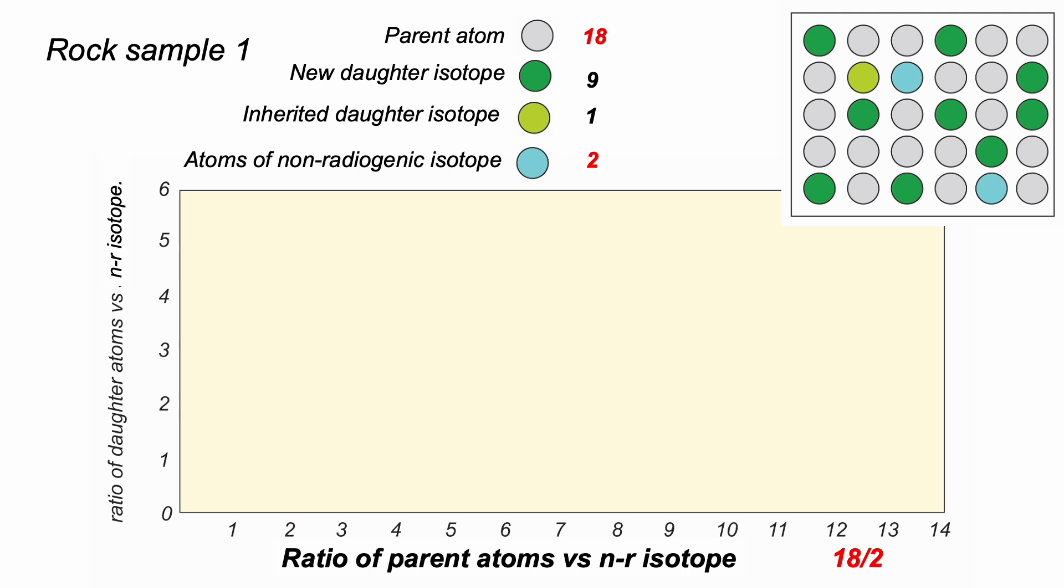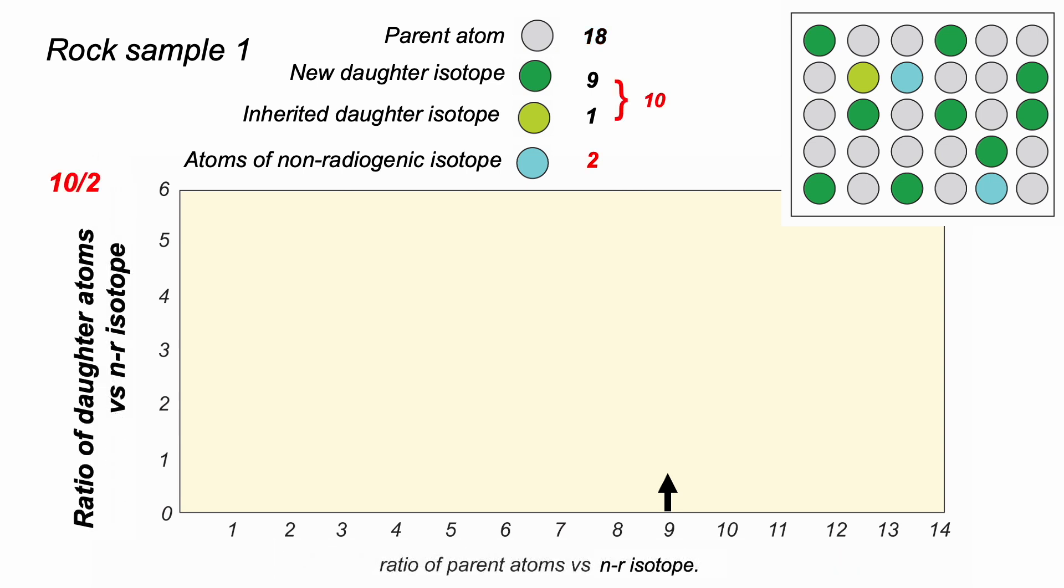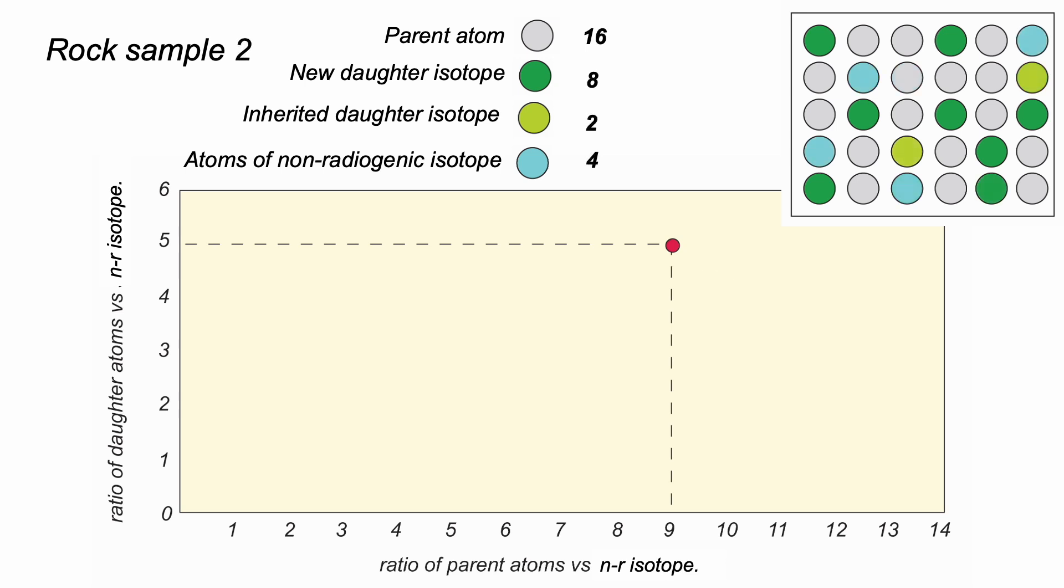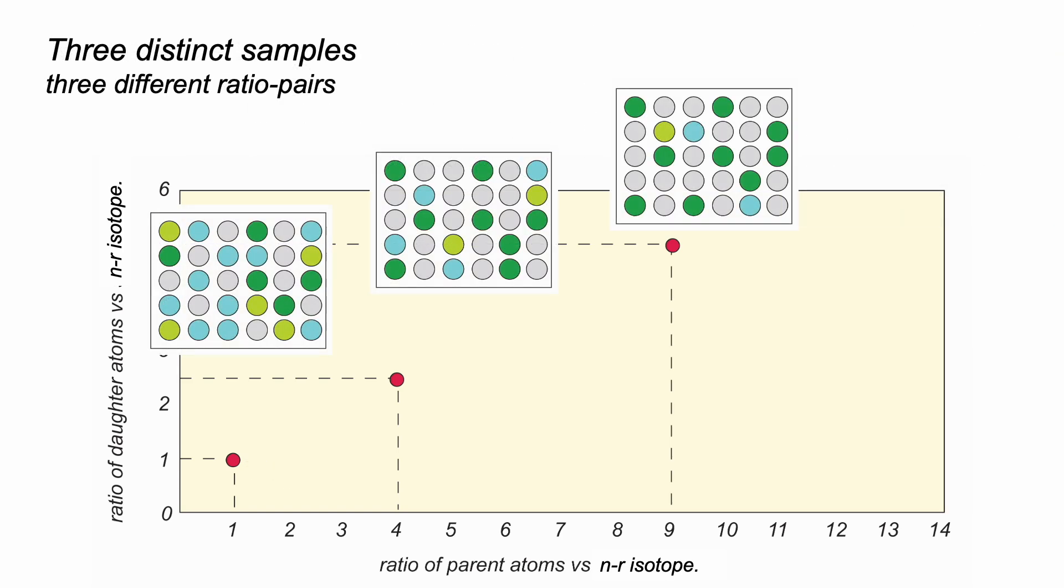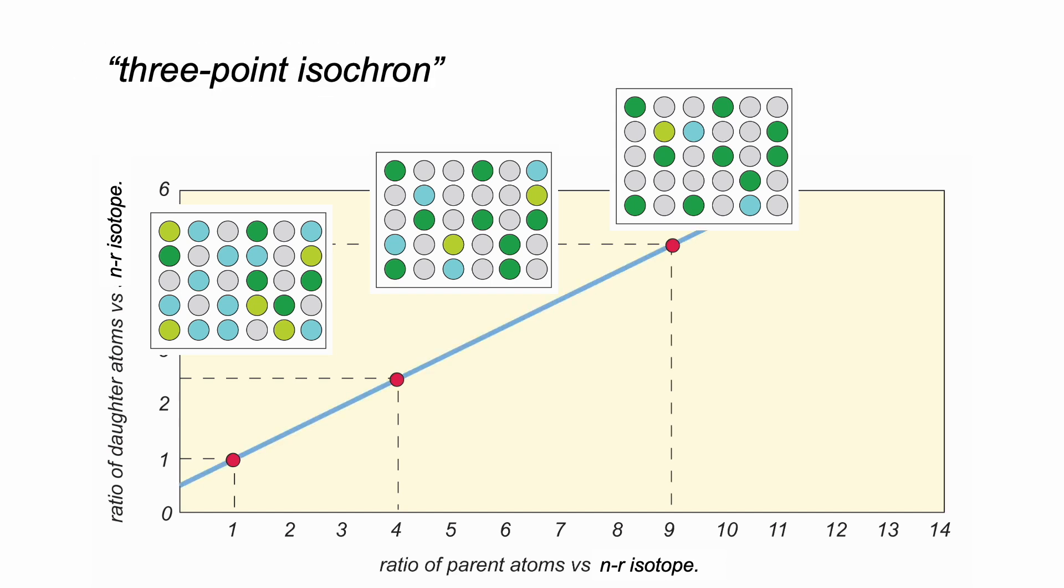So sample one has this composition. Parents versus non-radiogenic isotope, that's 18 to 2, plot here. And total radiogenic, 9 plus 1 equals 10, to 2, plots here. So here's sample one on the plot. Sample two plots here. Sample three plots here. Three distinct samples from the same overall geological formation which define a three-point isochron. The samples are all the same age. And this intercept gives the initial ratio of radiogenic and non-radiogenic isotopes of the daughter element.